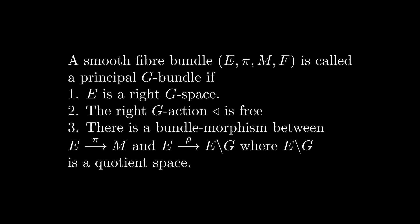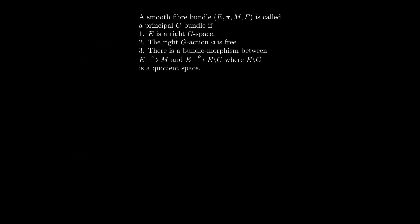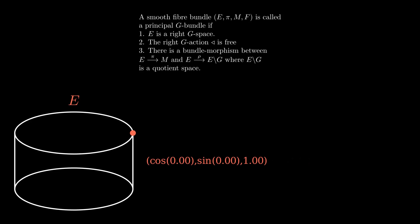Let us have an intermediate summary. In the Principal G-bundle definition, we have done the following. We have constructed a right G-space by defining the following right action. We take a real number and do addition on the last coordinate. Furthermore, we have shown that this right G-space is a free space.